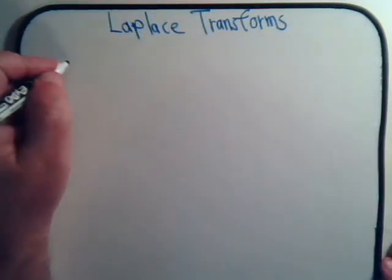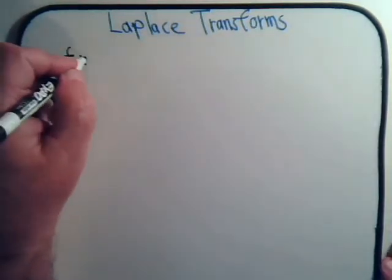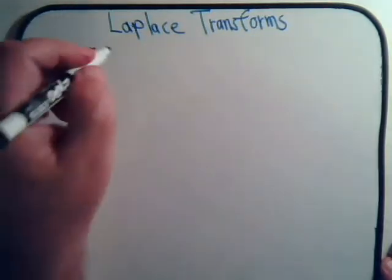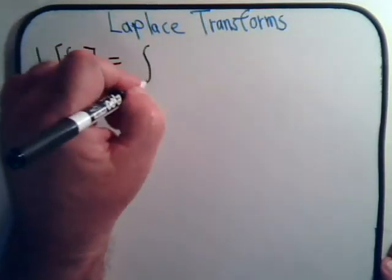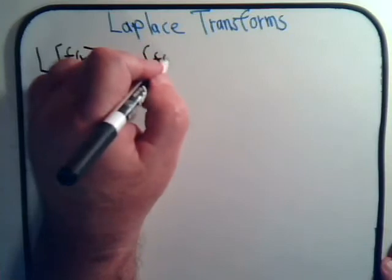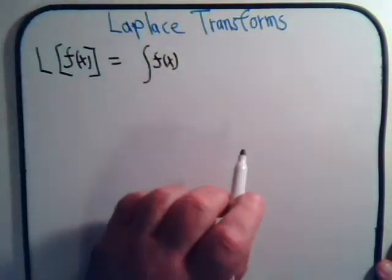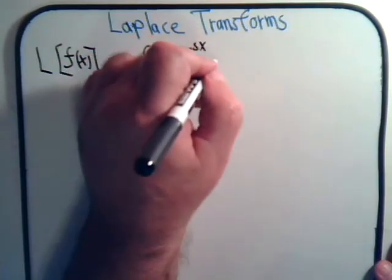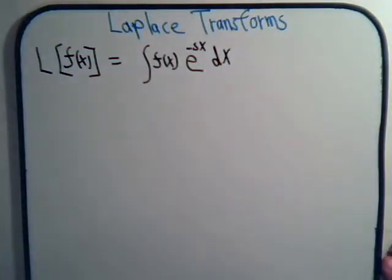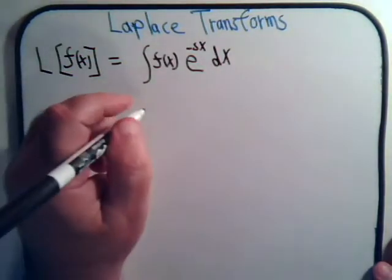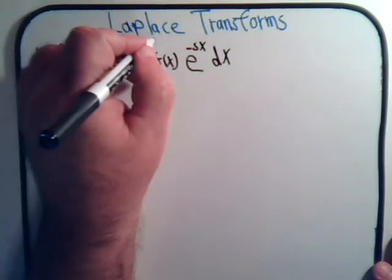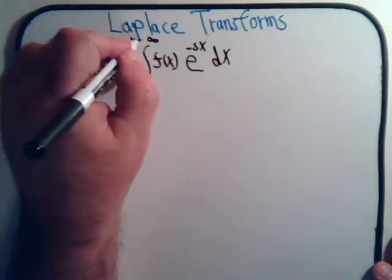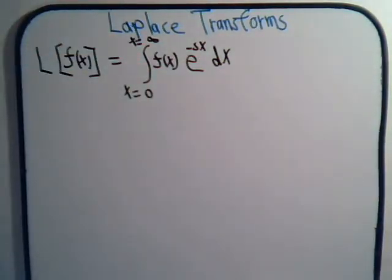If there's some function, say f of x, and we want to take the Laplace Transform, we multiply by e to the minus sx dx, and x goes from 0 to infinity.